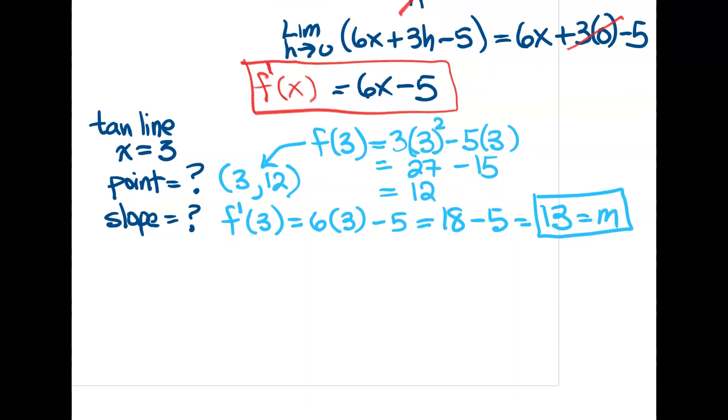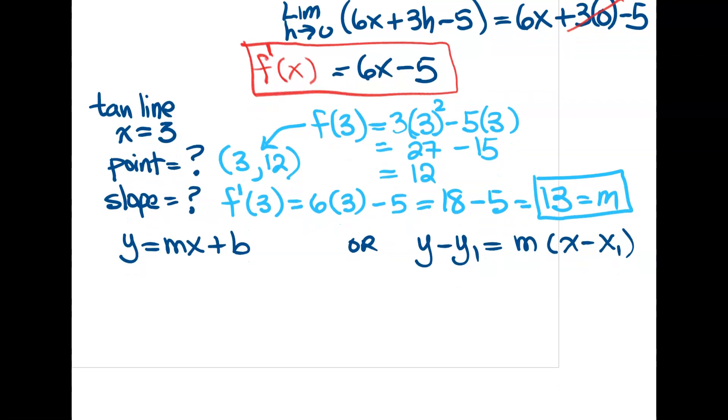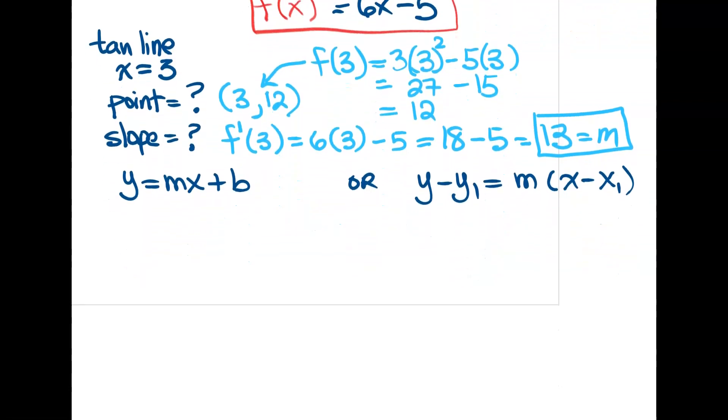Some of you like y equals mx plus b. So you can use this formula to get your equation of your line. Or you can use that point-slope formula, y minus y1 equals m times x minus x1. Either one of them is going to get you your tangent line. You just plug in the point and the slope in the appropriate places. I like to use this point-slope formula.